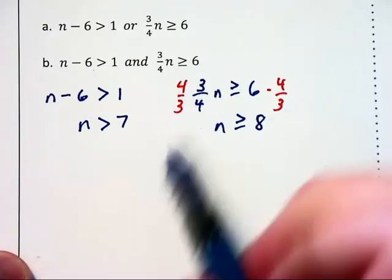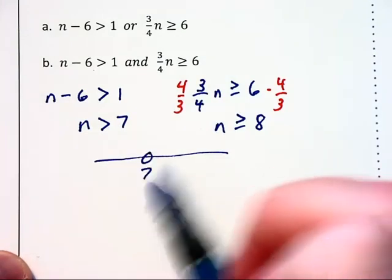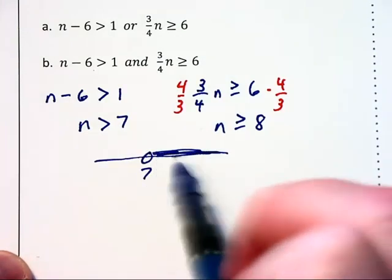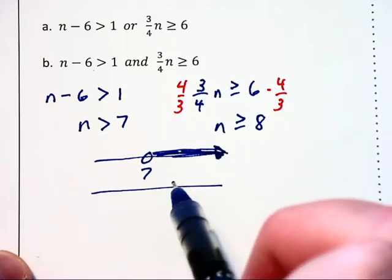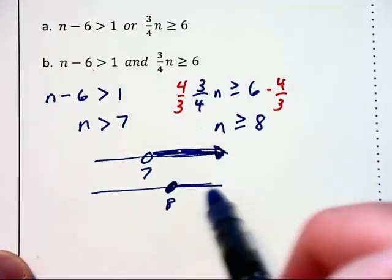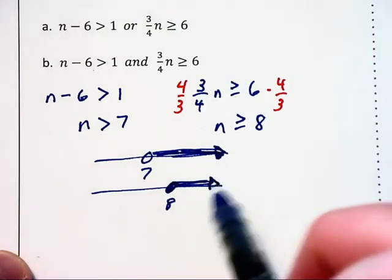So we have two different sets here. One of them is an open circle at 7 with all values to the right shaded. The other one is a solid circle at 8 with all values to the right shaded.